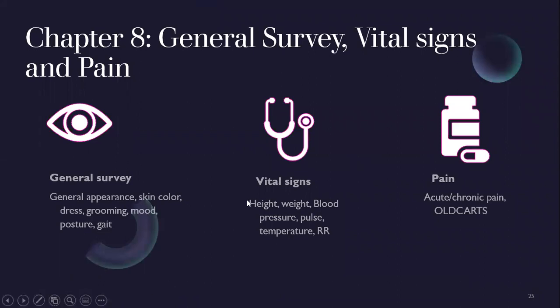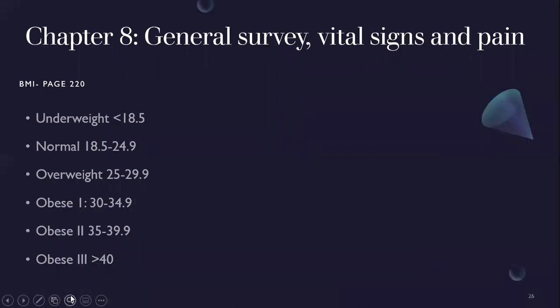Chapter 8 — general survey, vital signs, and pain. The general survey is just looking at the patient: skin color, how they're dressed, grooming, mood, posture, gait. Even before you talk to them or touch them you're forming a general impression. Vital signs: height, weight, blood pressure, pulse, temperature, respiratory rate. Pain: acute versus chronic, evaluated using OLD CARTS. BMI could be a topic on the exam — know the normal ranges for different BMI categories.